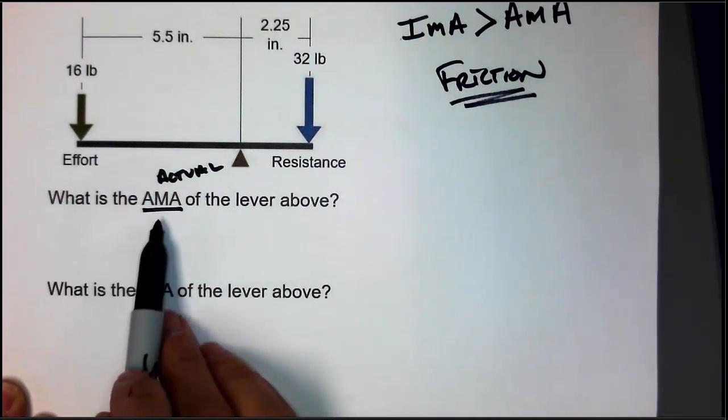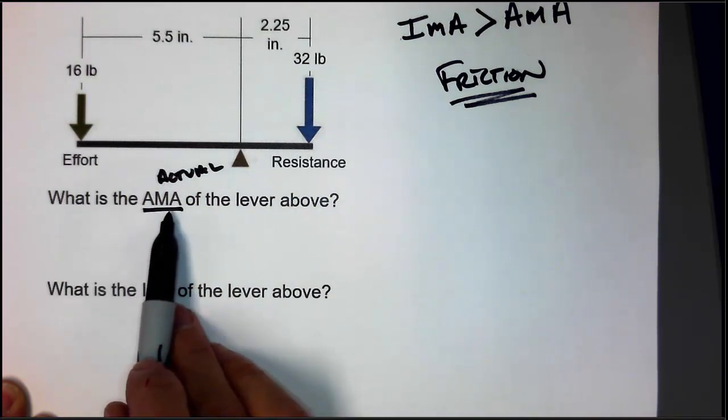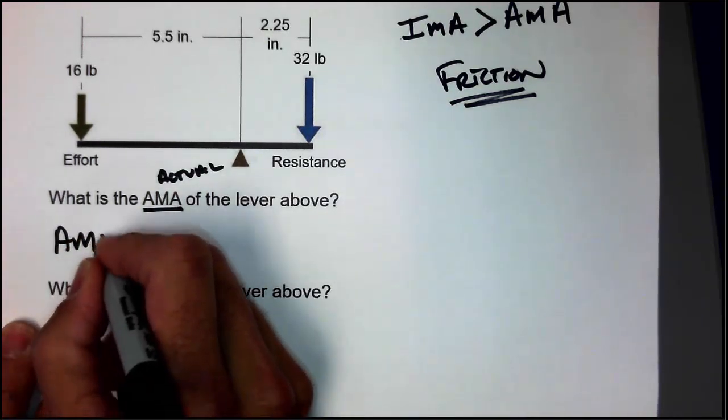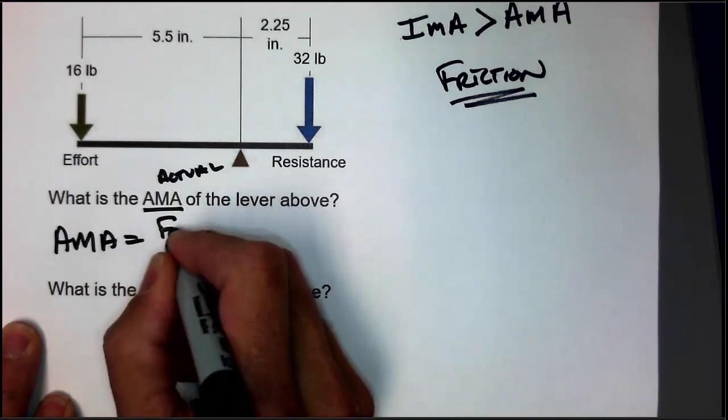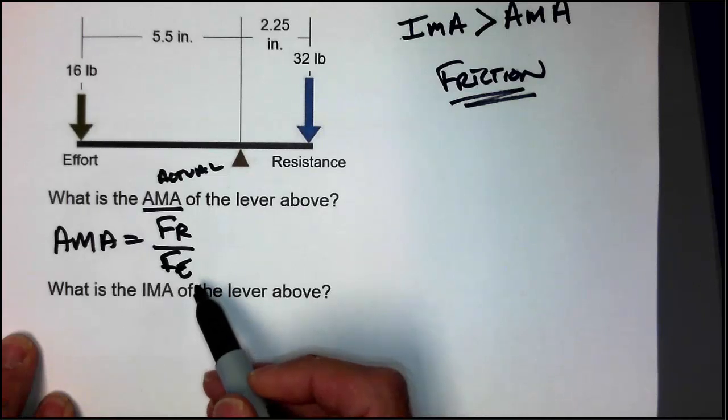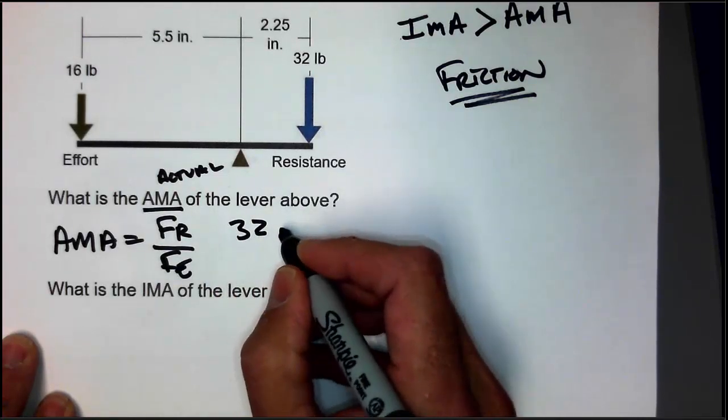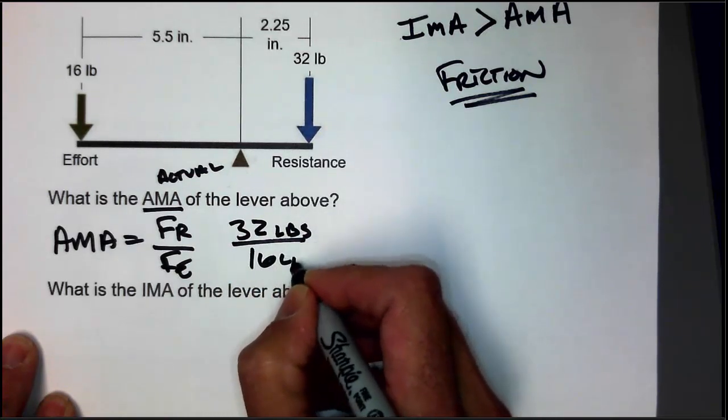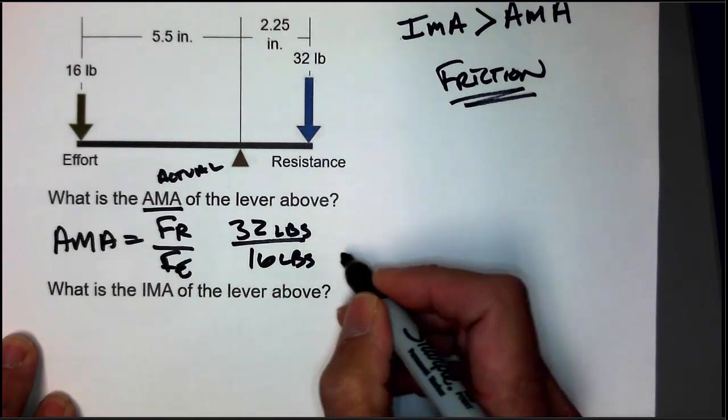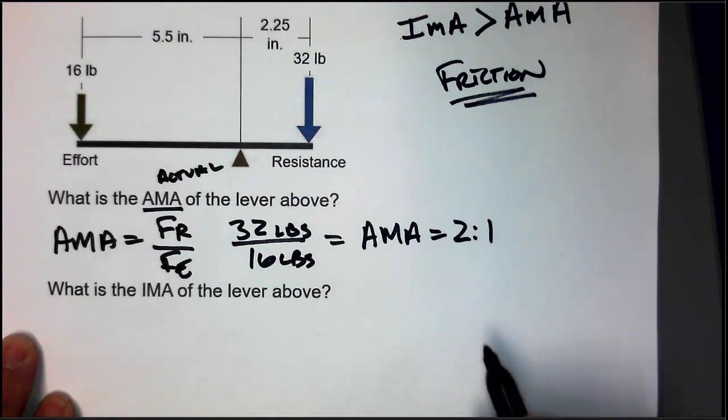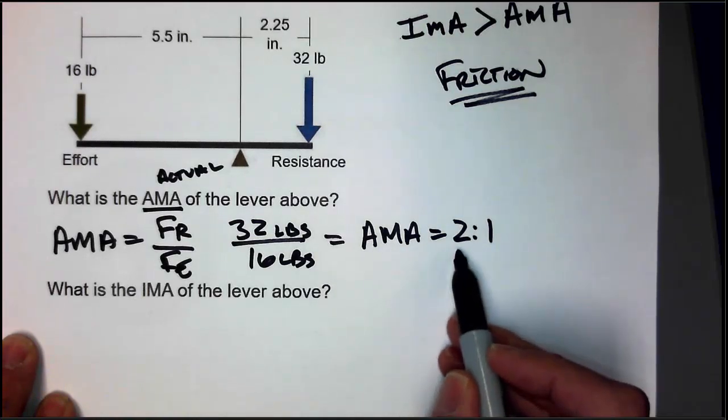So, let's try to find the actual mechanical advantage. When we do that, we always deal with the forces. AMA, the equation that we're going to use is resistance force over the effort force. That would be 32 pounds over 16 pounds in this case, and that would give us an actual mechanical advantage of 2 to 1.